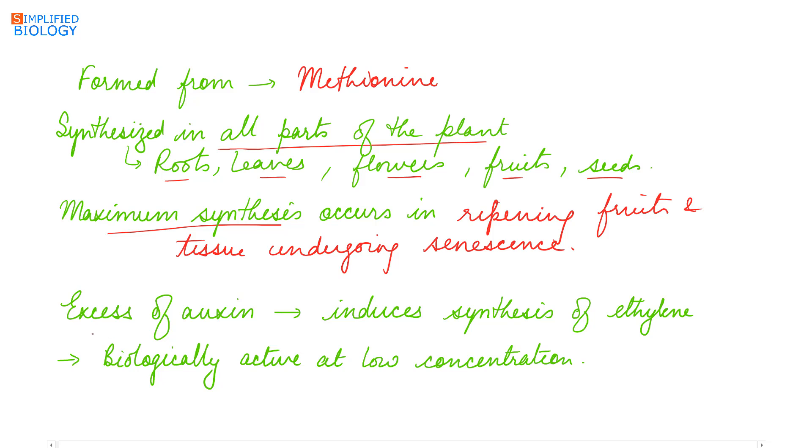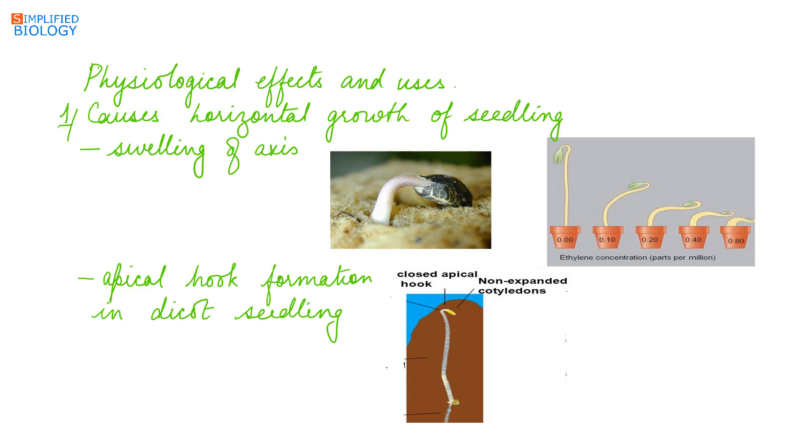Excess of auxin stimulates the synthesis of ethylene and it is biologically active at very low concentration. Physiological effects and uses of ethylene: